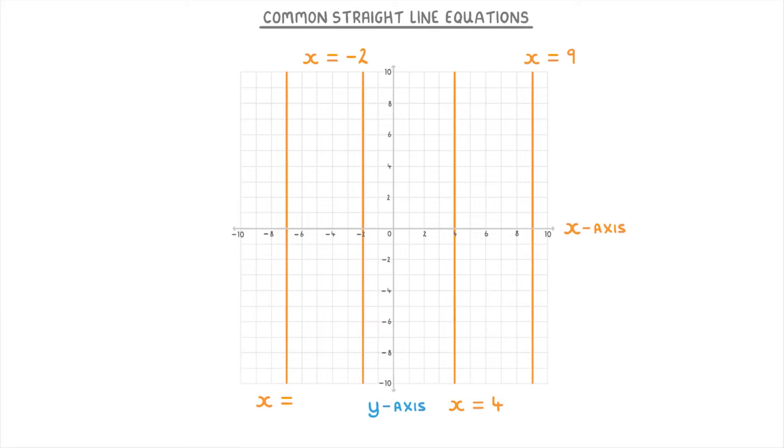And to find out what that something is, you just look at where it crosses the x-axis. So this one would be x equals negative 7.